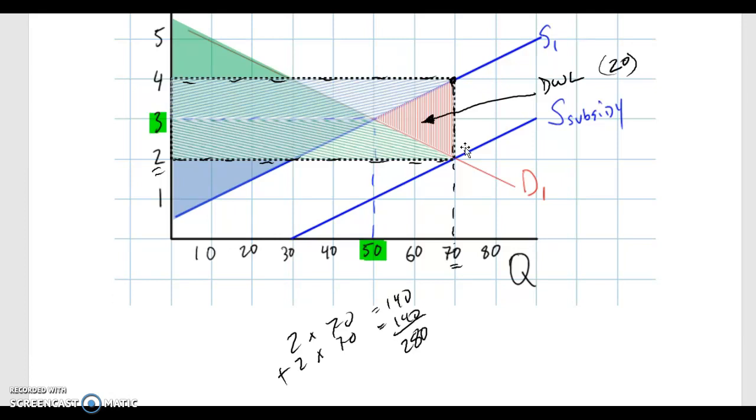Anyway, what that represents is a certain amount of spending that the government didn't have to do. So in a sense, they have overpaid to lower the price to two and get quantity demanded or quantity in the market up to 70, which kind of stinks because it's somebody's tax money and it could have been used differently. But we do have to remember that that money is actually revenue for producers. It's just that it's too much revenue.